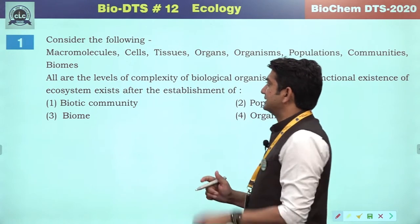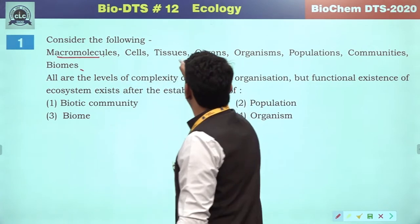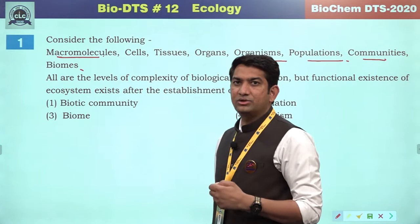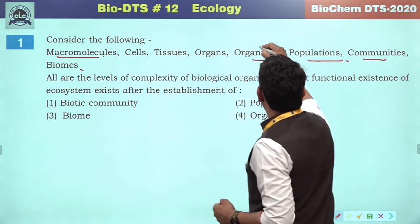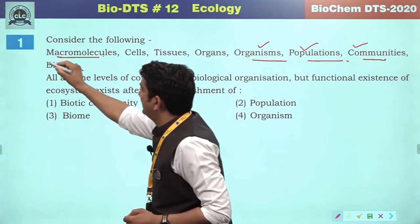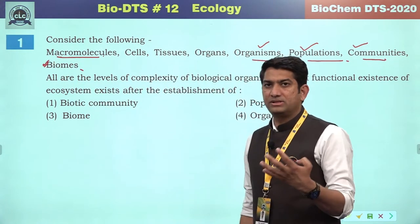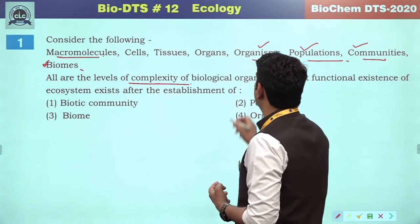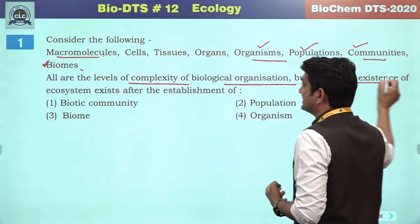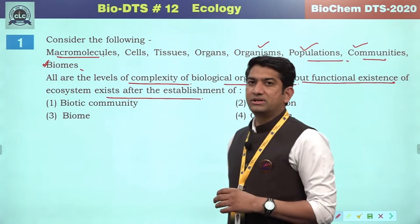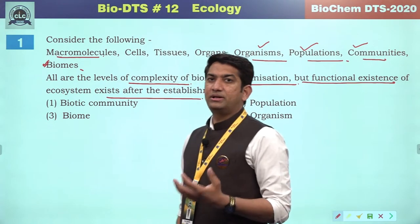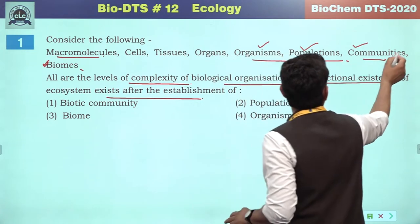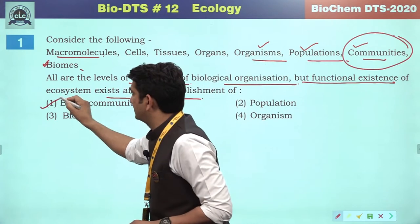The first question asks us to consider the following macromolecules: cells, tissue, organ, organism, population, communities and biomes. The hierarchy of biological organization includes organism, population, communities and biomes or biosphere as the four major aspects. The functional existence of an ecosystem exists after the establishment of a community — a biotic community — because no one can survive alone. So the correct answer is biotic community.